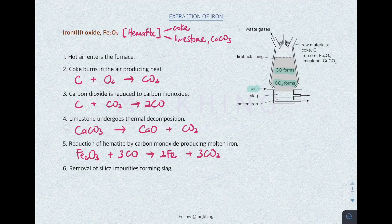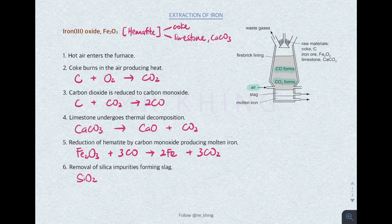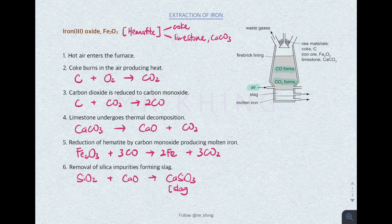One more thing: in the furnace itself there are impurities. The main impurity in the hematite is silicon dioxide — so-called silica. In order to remove these impurities, this is where limestone plays its role. Limestone undergoes thermal decomposition to form calcium oxide, and the calcium oxide reacts with the impurities to form calcium silicate, CaSiO3. Calcium silicate is also called slag, and slag is the waste product produced.